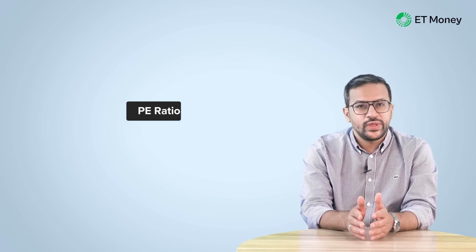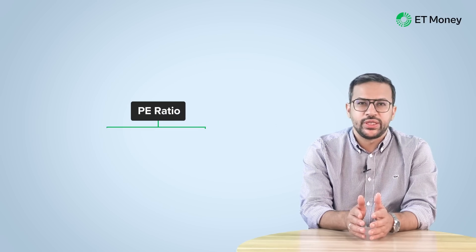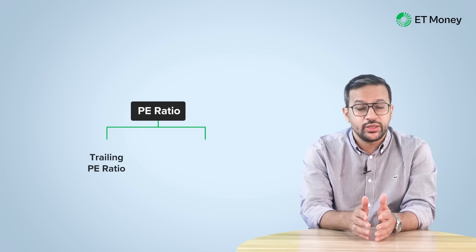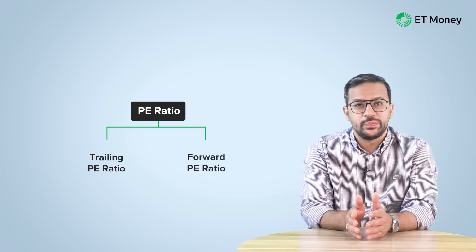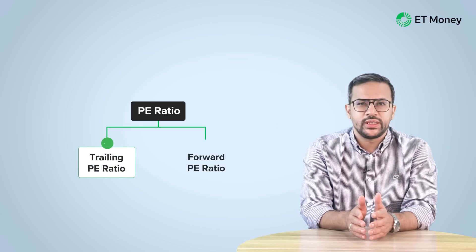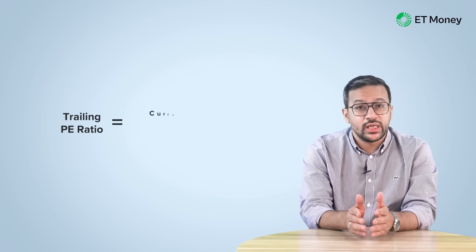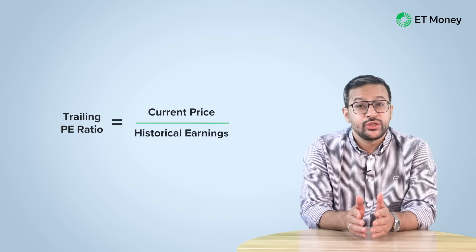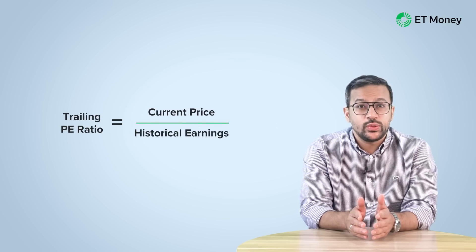There are two ways to look at the PE Ratio — you can check either the Trailing or the Forward PE. Let's first look at the Trailing PE Ratio. As the word trailing implies, we look at the historical earnings of the companies. We use the current price of the index and the historical earnings reported by companies to calculate the Trailing PE Ratio.